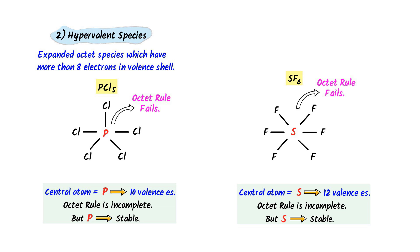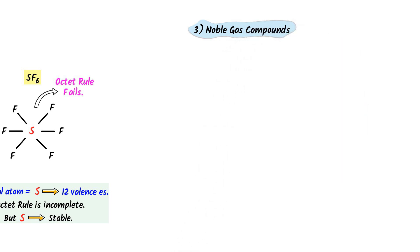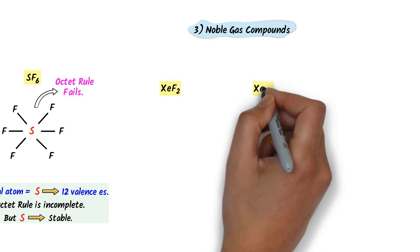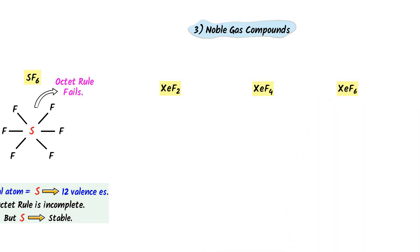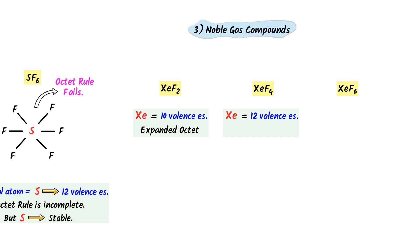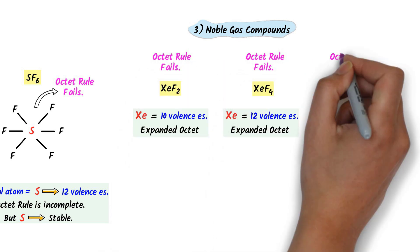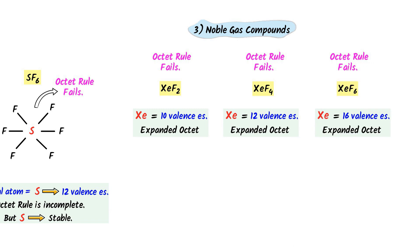The third limitation of the octet rule is noble gas compounds. Consider the xenon fluoride compounds: in xenon difluoride (XeF₂), xenon has 10 electrons — an example of a hypervalent or expanded octet species. In xenon tetrafluoride (XeF₄), xenon has 12 electrons, also an expanded octet. In xenon hexafluoride (XeF₆), xenon has 14 electrons, also hypervalent. These noble gas compounds demonstrate that the octet rule is not absolute because it cannot explain their stability.